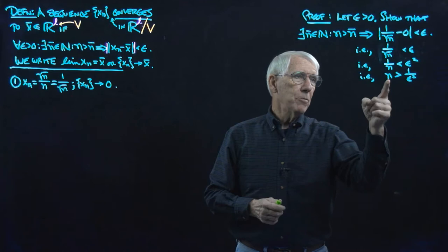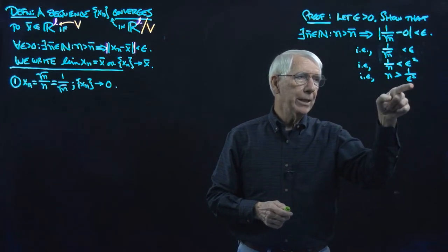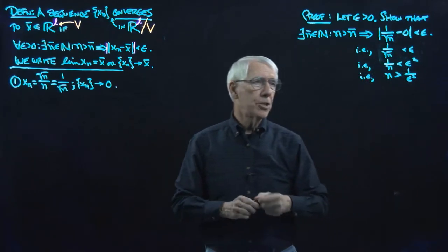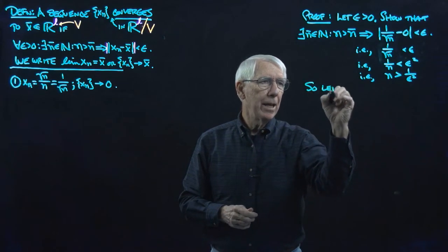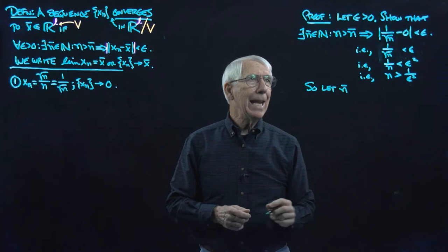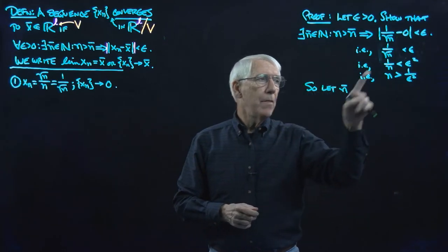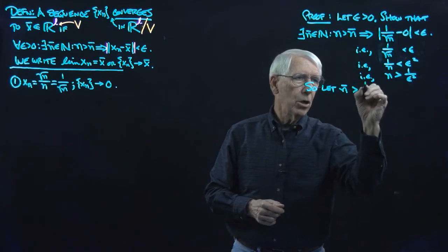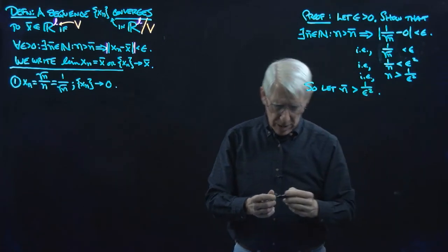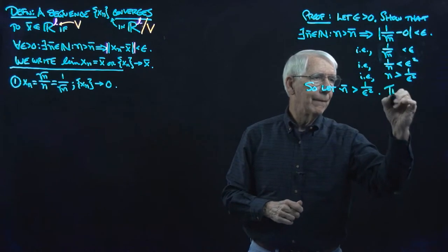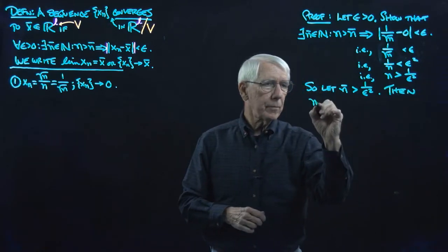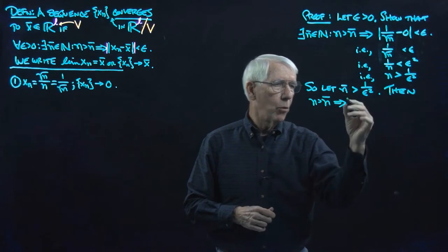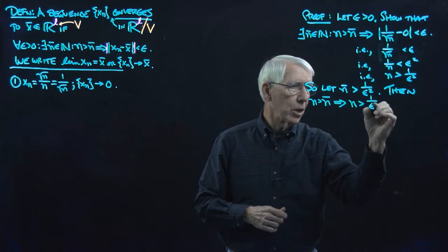So this tells me: if I have n large enough — larger than 1 over epsilon squared — then it will indeed be the case that the original inequality holds. So let N̄ be any natural number that is itself larger than 1 over epsilon squared. Then n greater than N̄ obviously implies n is bigger than 1 over epsilon squared.